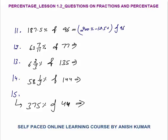Now 200% means 2. 12.5% is 1/8 of 96. Now twice of 96: 96 × 2 equals 192, minus 1/8 of 96 which is 12. So the answer will be equal to 180.